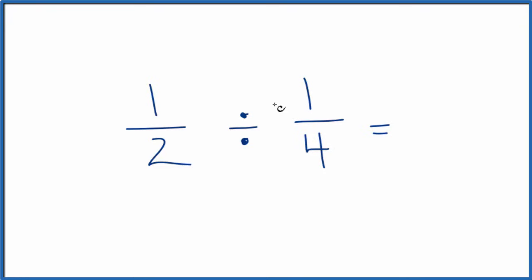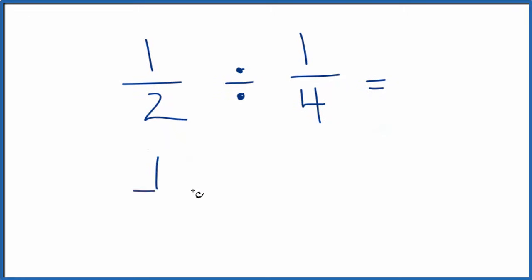The quick way to do this is we could do the opposite of division and then take the opposite here of 1 fourth. So when we do that we end up with 1 half and the opposite of division, that's multiplication, and then we take what's called the reciprocal here of 1 fourth.